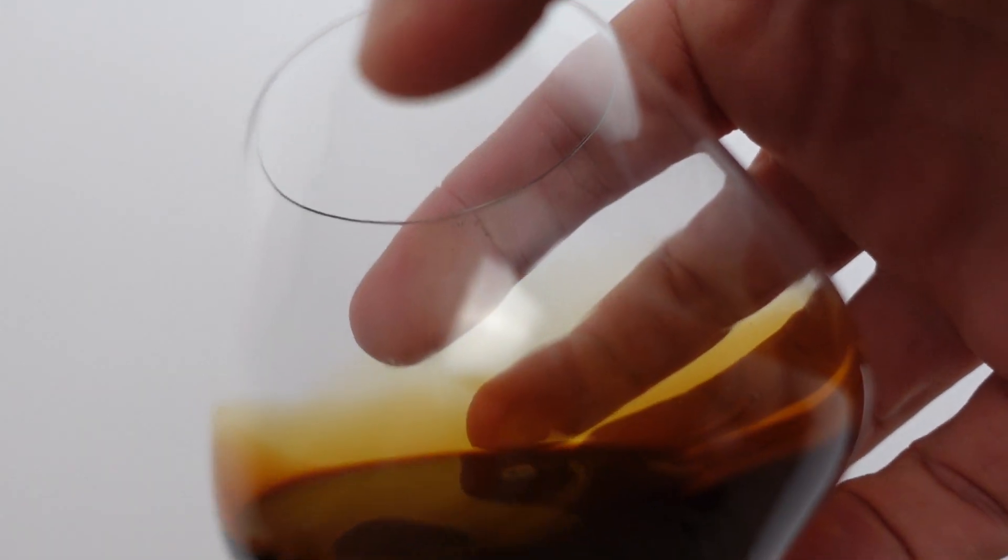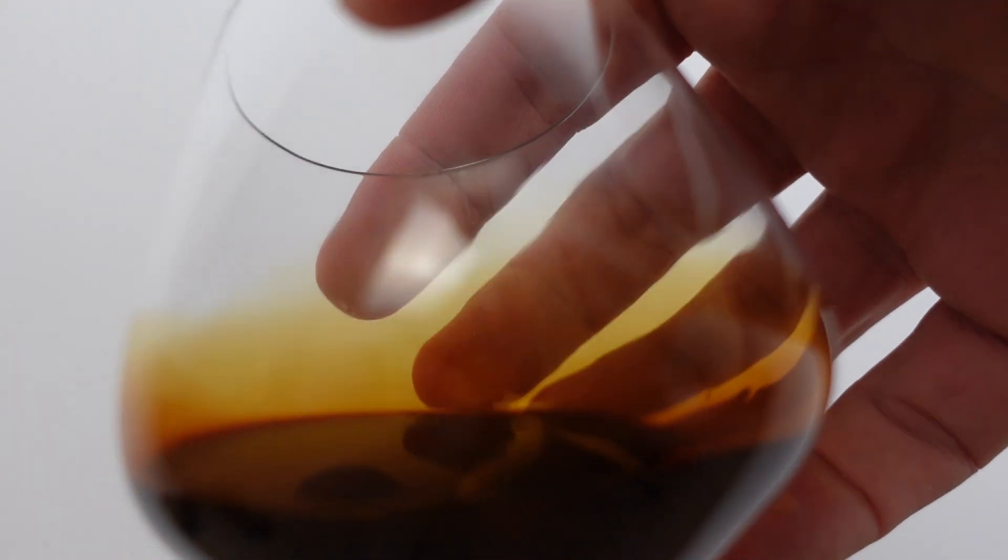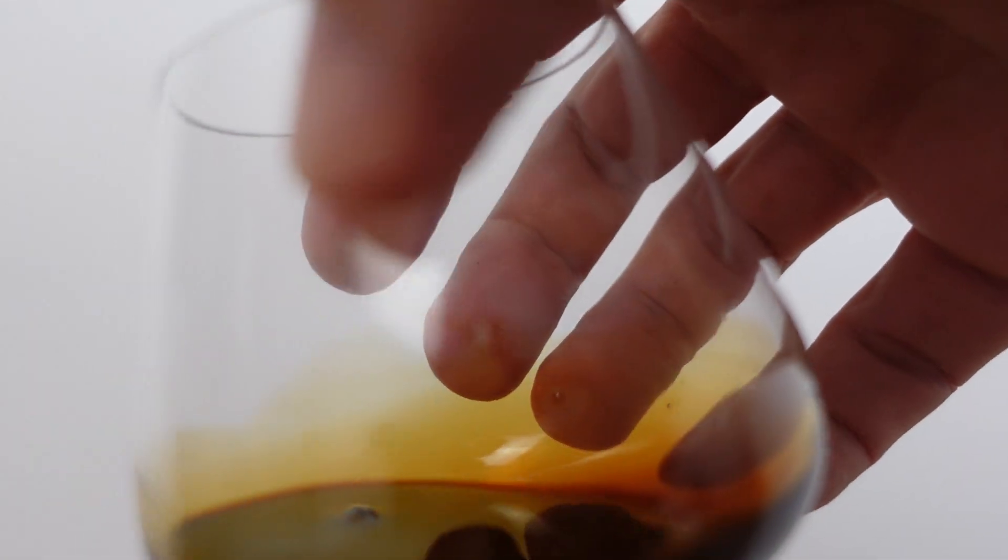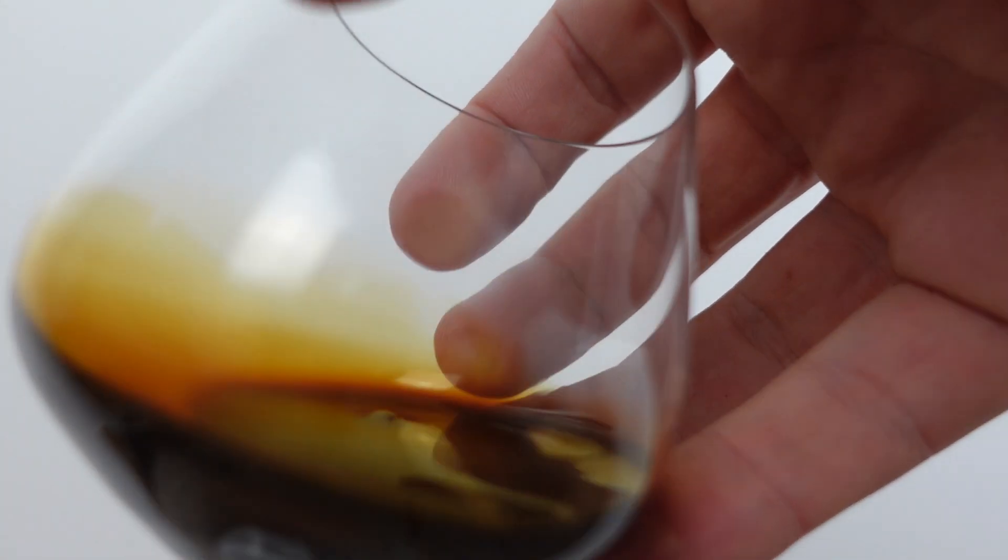You can see how it just sticks to the sides of the glass almost like a balsamic glaze, only with the glaze they cut the vinegar with sugar to make like a balsamic syrup out of it.